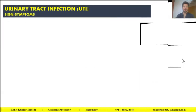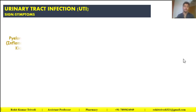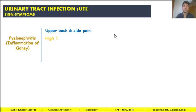Moving further to the signs and symptoms of urinary tract infection. We will discuss them one by one for kidneys, bladder, and urethra. The first category is pyelonephritis — inflammation of the kidneys. Signs and symptoms include upper back and side pain, high fever, shaking and chills, and nausea and vomiting.